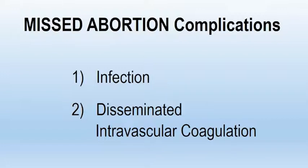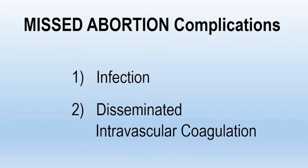With a missed abortion, remember that the products of conception are no longer viable but are still sitting in the uterus. For example, a patient comes in at 11 weeks and says she's just not feeling as pregnant as she did three weeks ago. On exam and ultrasound, it shows only an eight-week gestation fetus with no fetal heartbeat. This increases the risk of infection and of the woman developing disseminated intravascular coagulation (DIC), which will be discussed in another lecture. This ends the lecture on bleeding in the first trimester.